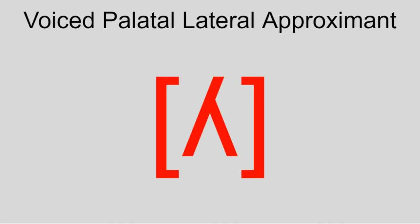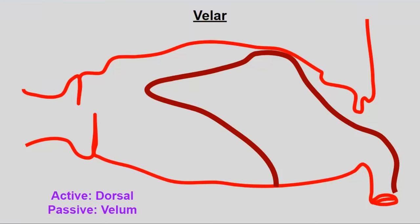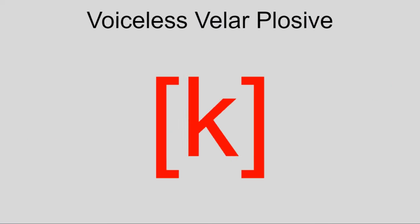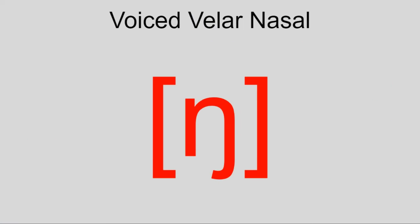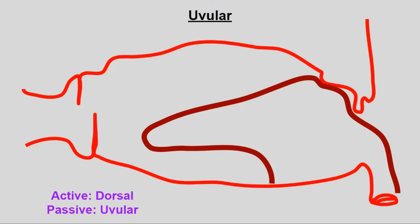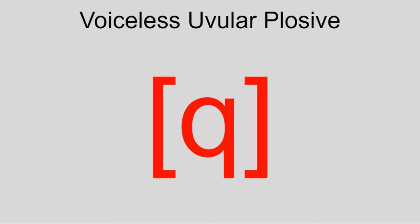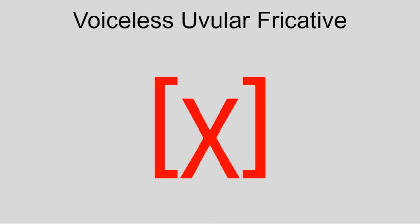Following that is velar, where the body of the tongue contacts the velum — the back part of the roof of the mouth. These sounds are relatively common and include K, G, ŋ, and the velar fricative. Then behind that is uvular — the uvula is the soft part at the back of the mouth with the dangly bit — making sounds such as the uvular stop, uvular trill, uvular fricative, and uvular approximant.